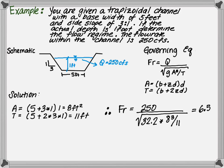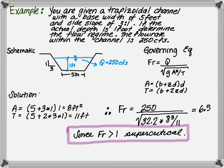Plugging this in with a base width of 5, side slopes of 3, and a depth of flow of 1 foot, we get an area of 8 square feet and a top width of 11 feet. The Froude number as a result is 6.5. 6.5 is much greater than 1, resulting in supercritical flow.